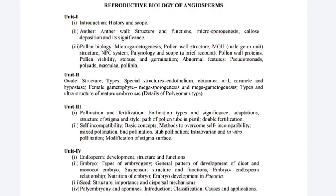Next: define megasporogenesis and megagametogenesis. Next: characteristic feature of Polygonum type of embryo sac. Next: development of bisporic embryo sac. Next: egg apparatus. Next: function of filiform apparatus. Next: what are antipodals. Next: what are tetrasporic embryo sac.